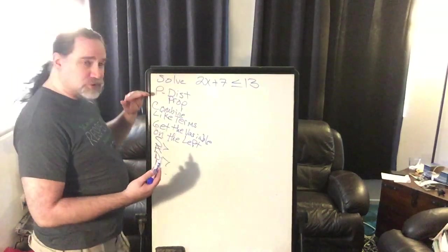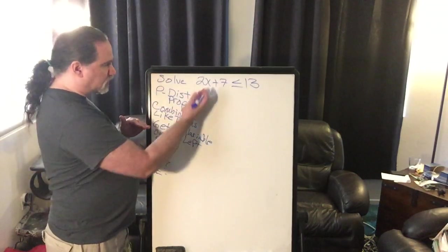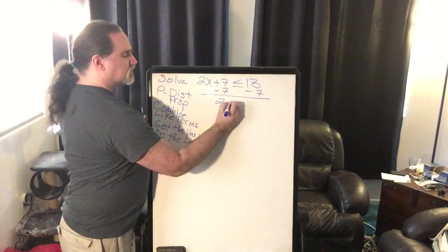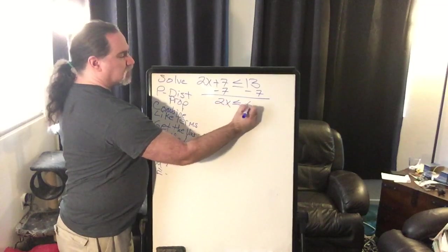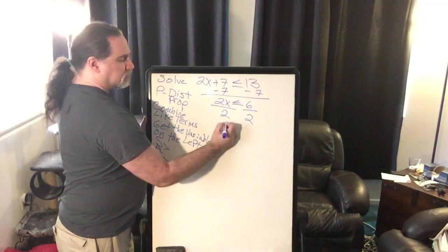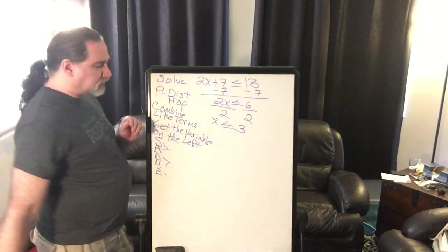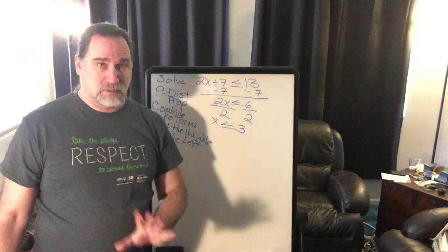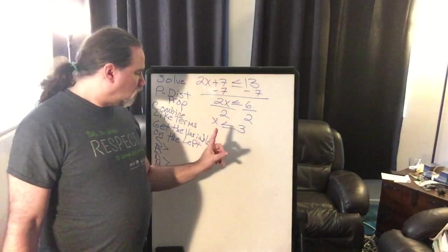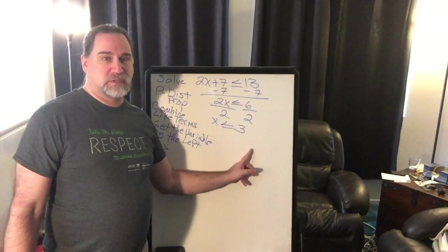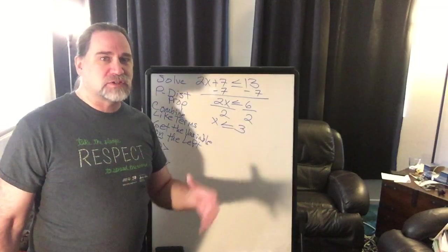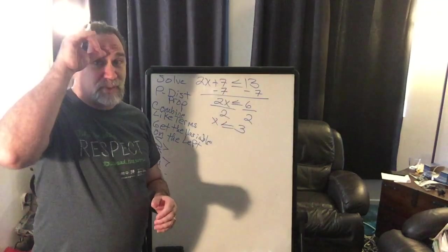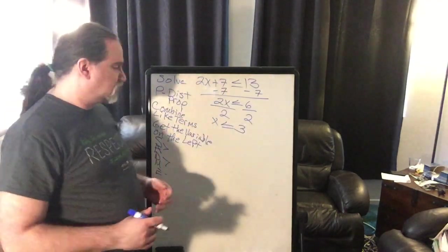Let's look at a very basic one: 2x + 7 ≤ 13. Remember, it's always important to be able to read the inequality sign. We solve this the same way — check for parentheses, combine like terms, get the variable on the left — then subtract 7 from both sides and divide both sides by 2. We get x ≤ 3. The answer is not just 3; it's all the numbers less than or equal to 3.